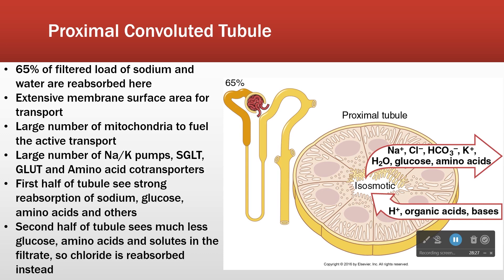If I were to ask you which part of the proximal convoluted tubule has the largest energy expenditure, it's going to be the first half, because of all of the sodium-potassium transporters and what they're powering. The other thing to know about the PCT is that this is all obligate — it's on all the time.